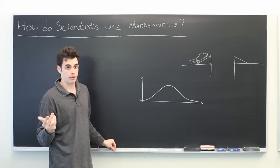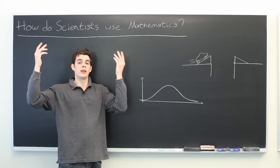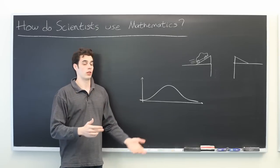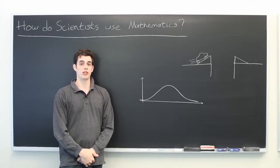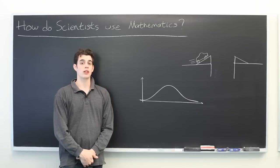These are just two of many different examples of how scientists can use mathematics. You can think of a way that data can be represented as numbers or symbols. There's surely a way that mathematics can be used to help you find what you're looking for. My name is Ryan Malloy, and we've just discussed how do scientists use mathematics.